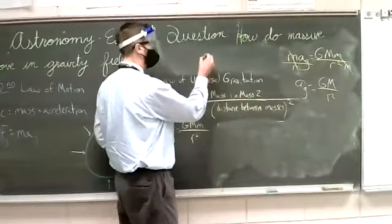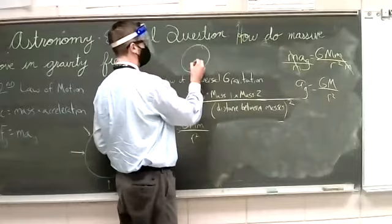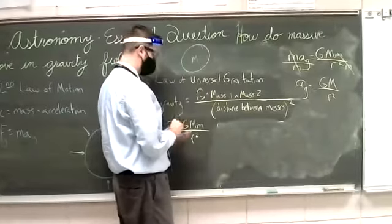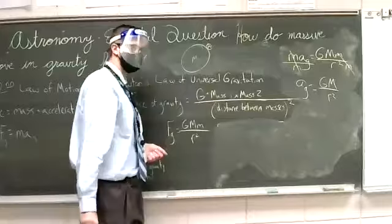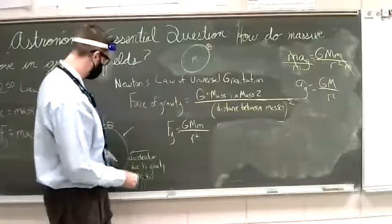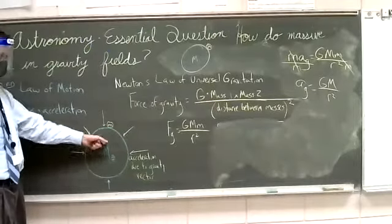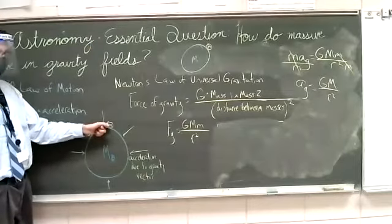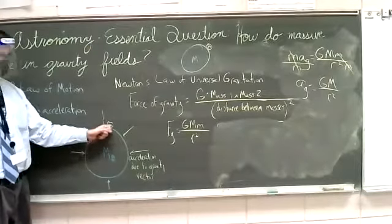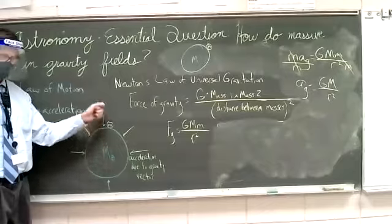The setup here is that we've got planet Earth, which has mass capital M. We've got some object on its surface, lowercase m. And we're saying, what's the gravitational attraction for this big one? What's the gravitational attraction for you sitting here on the surface of the Earth? You're a small mass compared to the mass of the Earth. How strong is gravity?